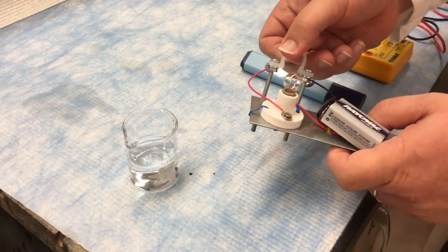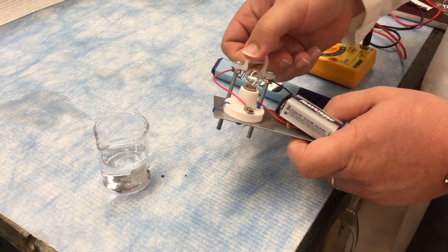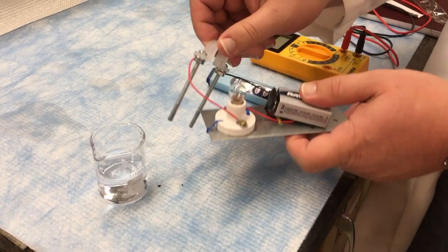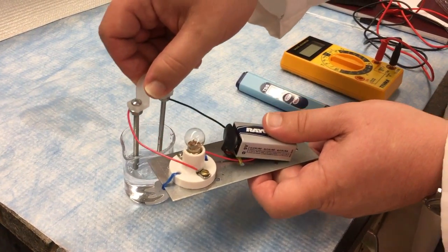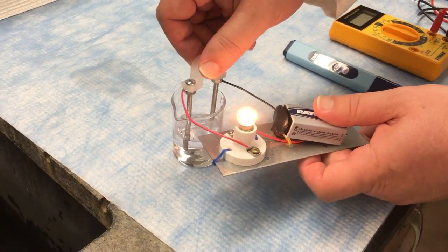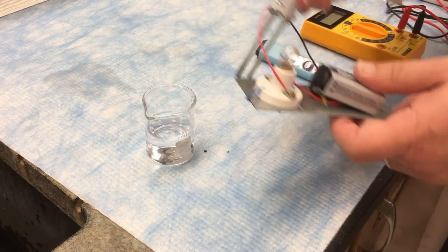So if there's a conductive material between the two screws here, between the leads, the light will go on. So let's check out the solution over here is conductive. Just immerse the two leads and you can see the light go on. Take it out and it goes off so it's all good.